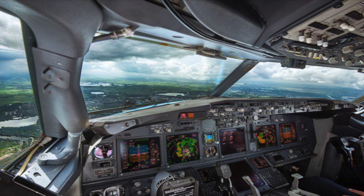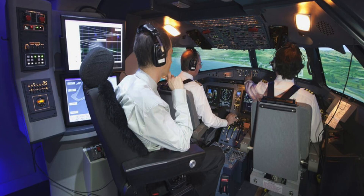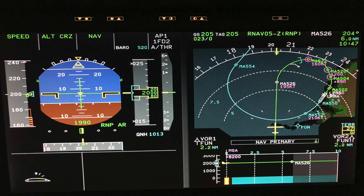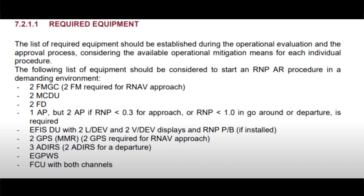Among those criteria, crew qualifications: the crew must be trained and certified to fly those curved approaches with marginal clearance from surrounding terrains and mountains. Second, the aircraft itself must be certified to maintain and achieve the required accuracy, with an onboard performance monitoring system to alert the crew in the unlikely event of system malfunction. In addition to other minimum equipment that must be onboard: two GNSS receivers, two FMGS, two MCDUs, two flight directors, two autopilots if RNP is less than 0.3 nautical mile for approach or RNP one or less for missed approach, three ADIRS, enhanced GPWS, and a flight control unit panel.